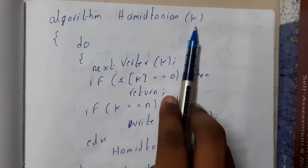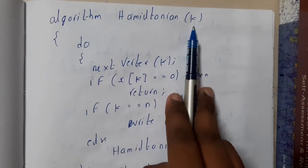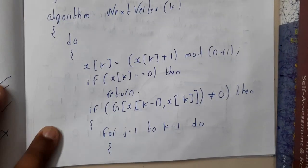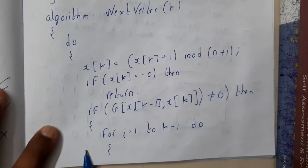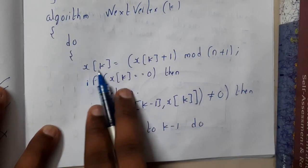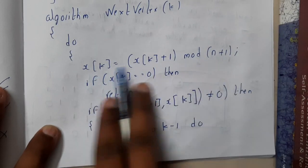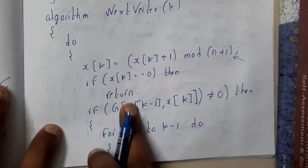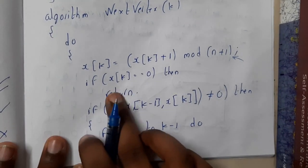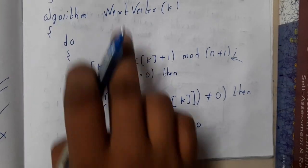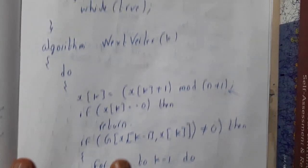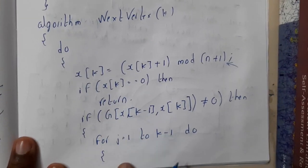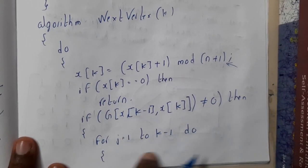In the algorithm for Hamiltonian cycle, k is the starting vertex. We do 'next vertex' — next vertex is used in multiple algorithms and it finds the next vertex. If that vertex's cost equals zero, it will return directly. Initially we initialize all costs to zero. If the cost is not equals to zero, we check for some more conditions and follow some loops for the operations.